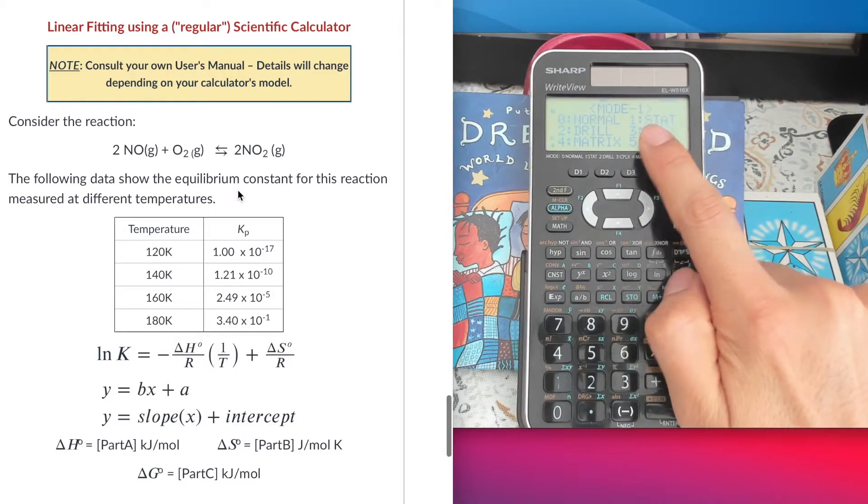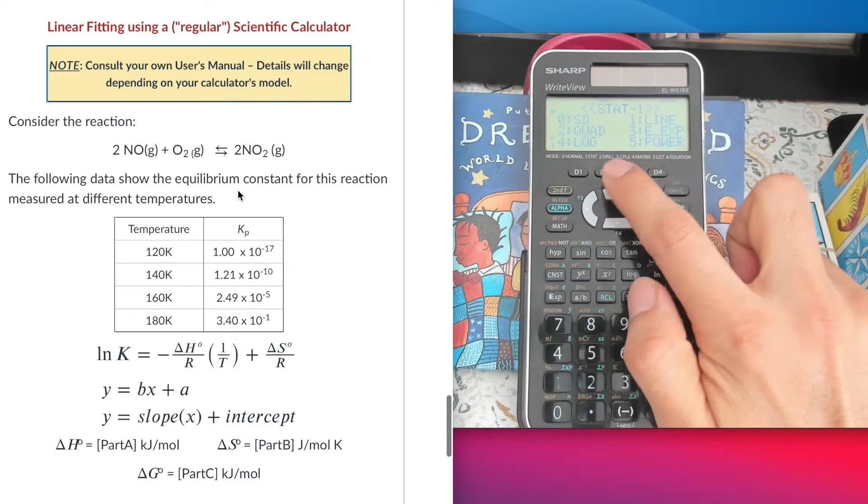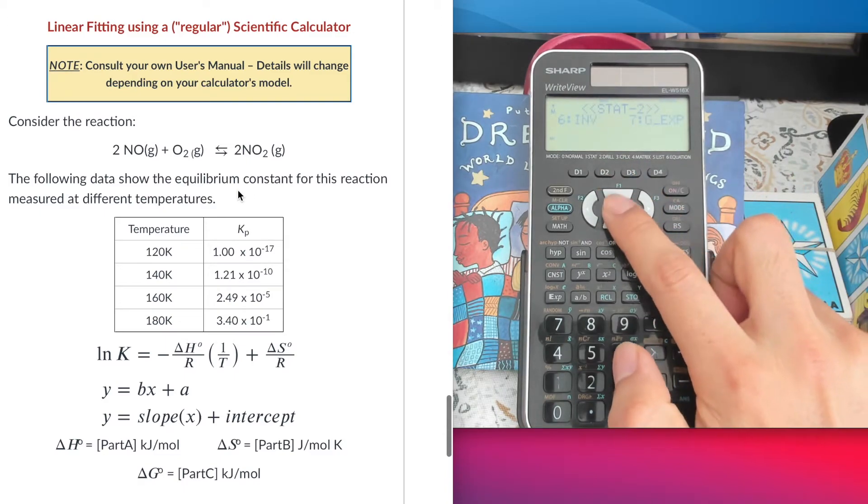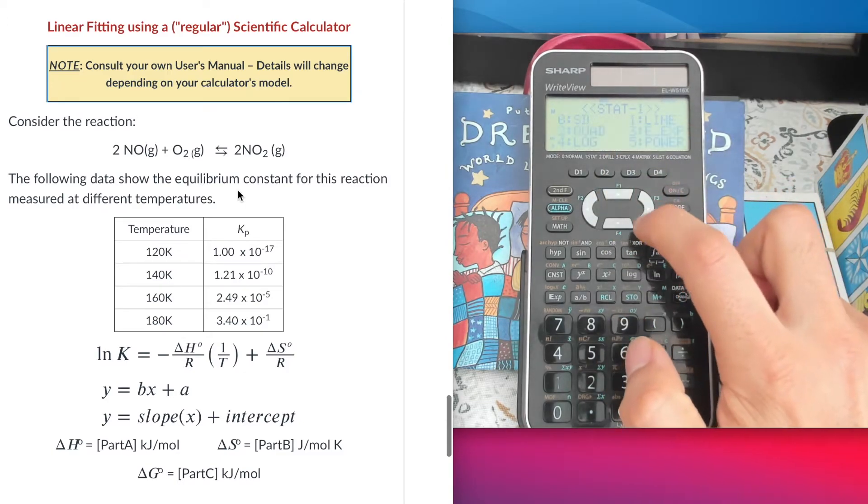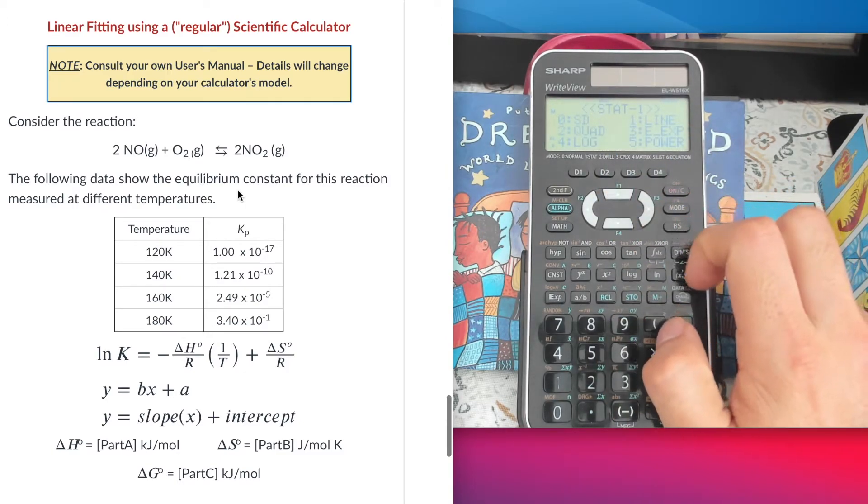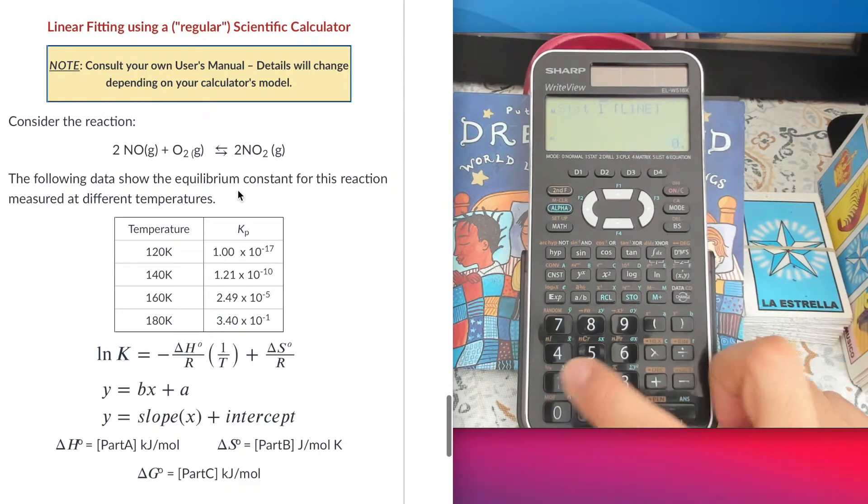In this case, I'm going to use the statistics mode number one, and within this one, look, I have different options. It's a good calculator, relatively cheap but good calculator. I have eight different ways of dealing with statistic modes. I'm going to use the linear fitting, so I have to select one.